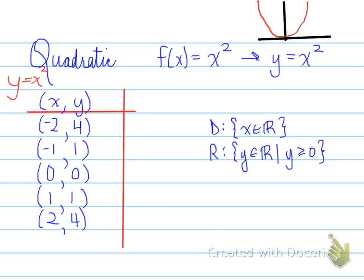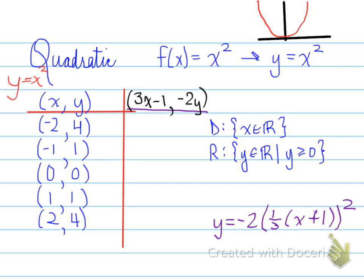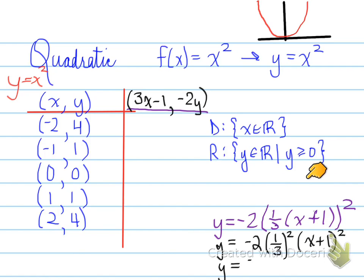The domain and range changes according to transformations, so let's look at an example. With this equation, we have a vertical reflection, a vertical stretch by a factor of 2, a horizontal stretch by a factor of 3, and a translation of left 1. In the table, we will have 3x minus 1 and negative 2y, with no vertical translation. When we expand the quadratic, you will have one-third pulled up to make it squared, and we simplify the a value to get negative 2 over 9, leaving x plus 1 all squared. You can expand x plus 1 all squared to x squared plus 2x plus 1 if you want.